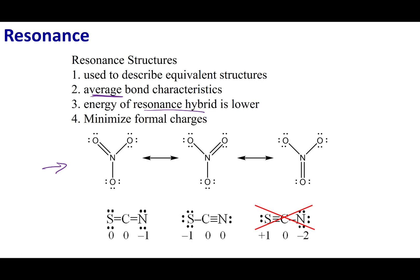You can do the same exercise with the nitrite ion. There are three possible resonance structures, with a resonance arrow drawn between each of the three valid Lewis dot structures. The resulting resonance hybrid is the average of all three. If you take the average of the bond between, say, oxygen A and the nitrogen, you'll find it averages to one and one-third bond — true for each oxygen. Test yourself to derive one and one-third.